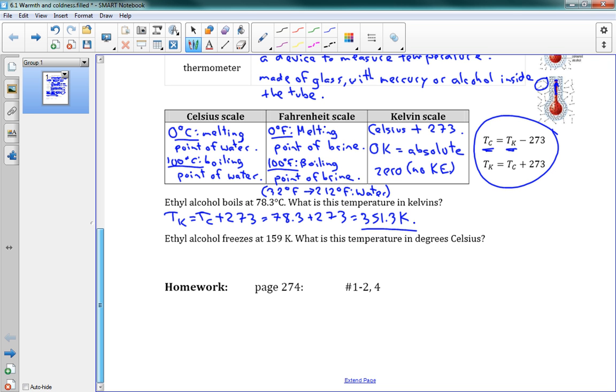The last one here, ethyl alcohol freezes at 159 Kelvin. What is this temperature in degrees Celsius? Well, Tc is equal to Tk minus 273. 159 minus 273 is equal to negative 114 degrees Celsius. There you go.